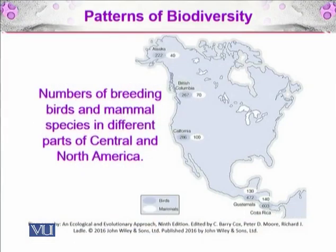Here you can see the number of breeding bird and mammal species in different parts of Central and North America. On the lower side of the diagram you can see the birds in blue and mammals in white.